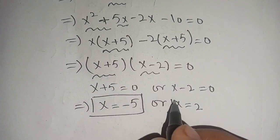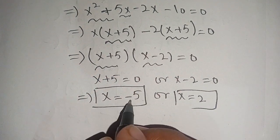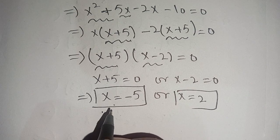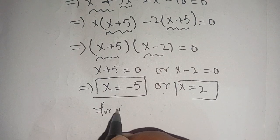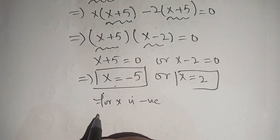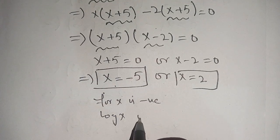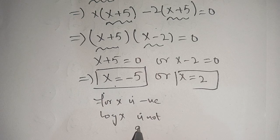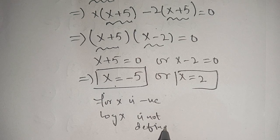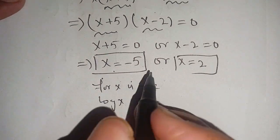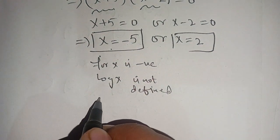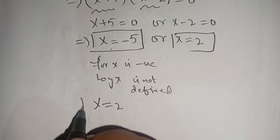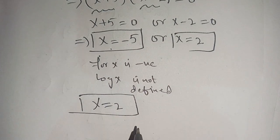Now when x is equal to minus 5, we know that for x negative, log of x is not defined. Thus the required value of x is only 2, which means that x is equal to 2 only satisfies our given equation.